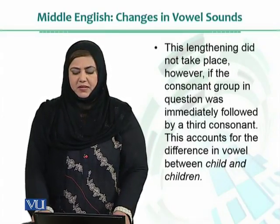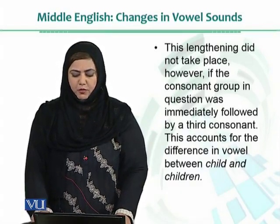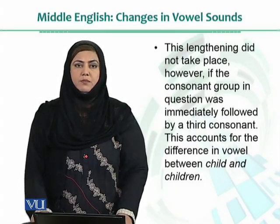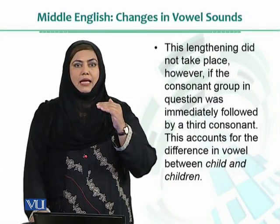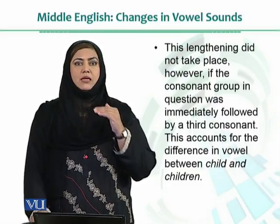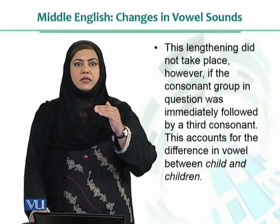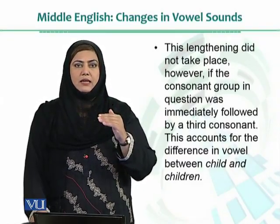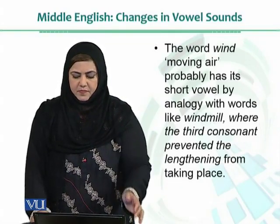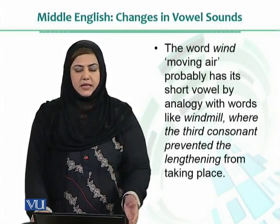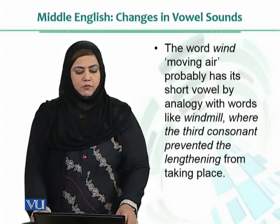This lengthening did not take place, however, if the consonant group in question was immediately followed by a third consonant. This accounts for the difference in vowel between 'child' and 'children.' In 'child,' we produce a longer sound — the LD combination at the end causes lengthening. But when something else is added after that, when it becomes 'children,' it does not remain with the long vowel. Rather, it is 'children' with a short vowel. The word 'wind,' meaning moving air, probably has its short vowel by analogy with words like 'windmill,' where the third consonant prevented the lengthening from taking place.